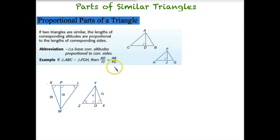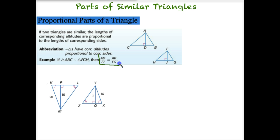Let's look at altitudes. If two triangles are similar, the lengths of the corresponding altitudes are proportional to the lengths of the corresponding sides. It's basically the same theorem we just looked at, only this time we have an altitude instead of an angle bisector. Here is our ratio: AD over FJ — so the altitude in that triangle over FJ in this triangle — is going to be in the exact same ratio as the corresponding sides, such as AB over FH.